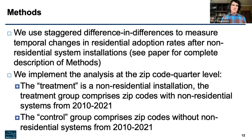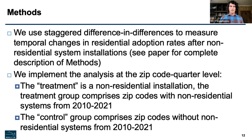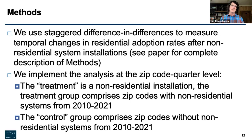We use a staggered differences-in-differences model. The treatment group are zip codes that had a non-residential system installed; the control group are zip codes that did not. What we're doing is measuring differences in residential adoption rates between zip codes with non-residential systems and those without. Under a handful of assumptions and some econometric modeling, those differences provide evidence of the influence of non-residential systems.